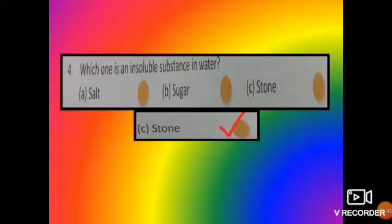Next number 4. Which one is an insoluble substance in water? Options are salt, sugar and stone. Now children, you know that salt and sugar are soluble in water and stone is insoluble. So, the answer is stone.